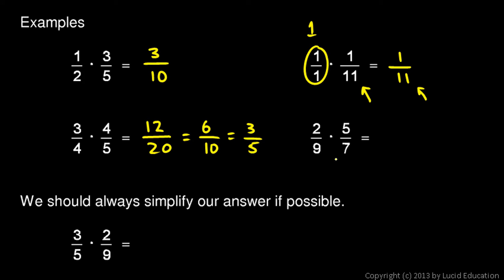And then over here, 2 ninths times 5 sevenths. Multiply the numerators. 2 times 5 is 10. And multiply the denominators. 9 times 7 is 63. And then I mentioned that we should always simplify our answers if possible, like we did here. Sometimes the answer comes out to a fraction that can be simplified. And if your answer can be simplified, it should be.